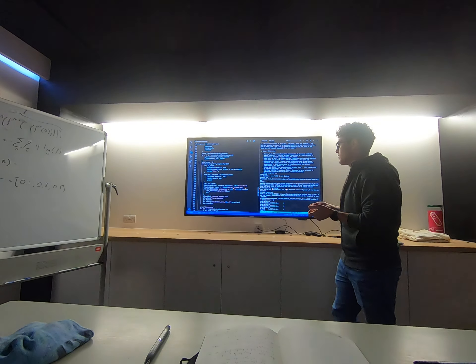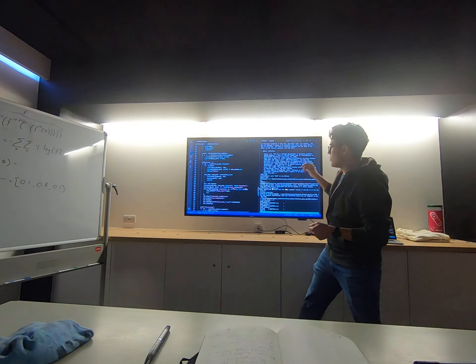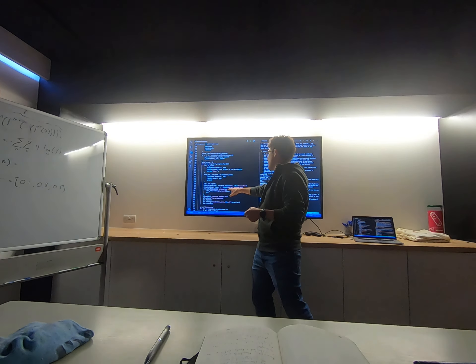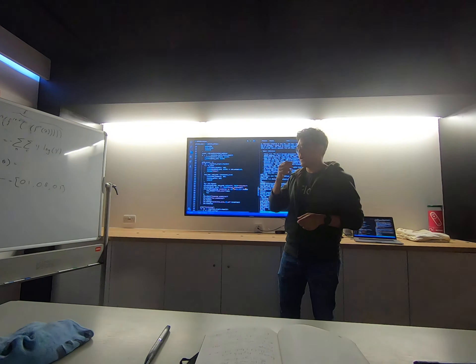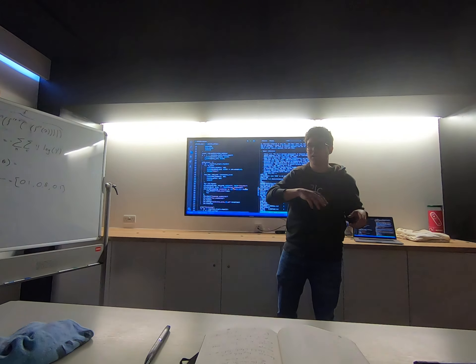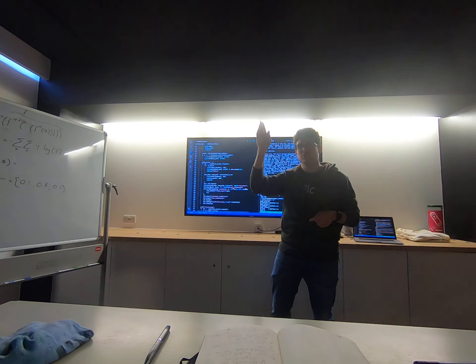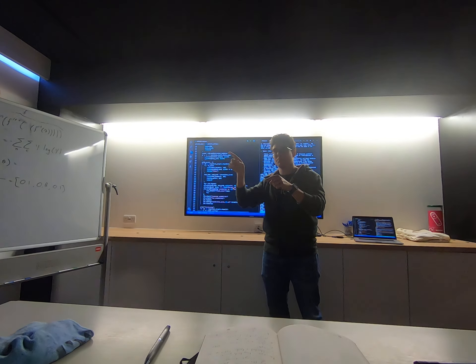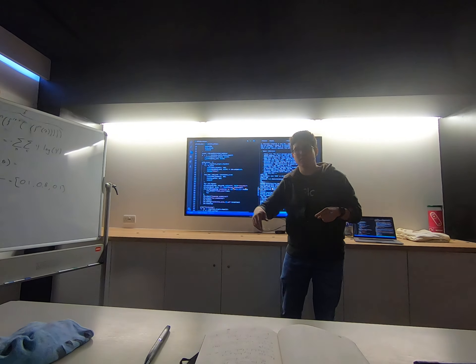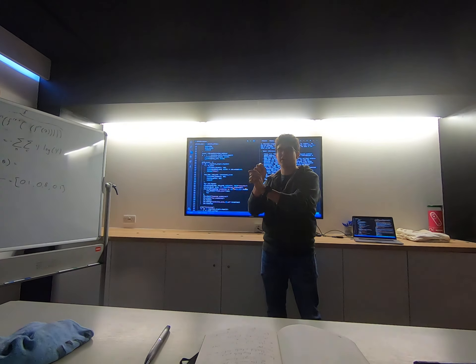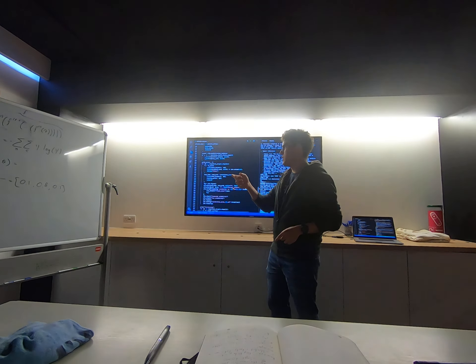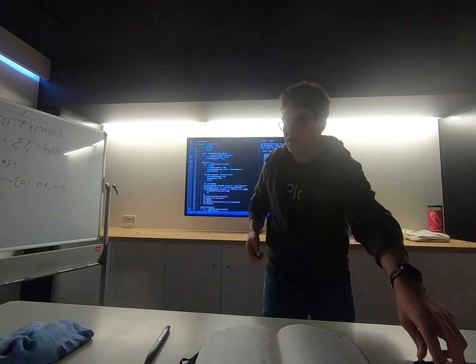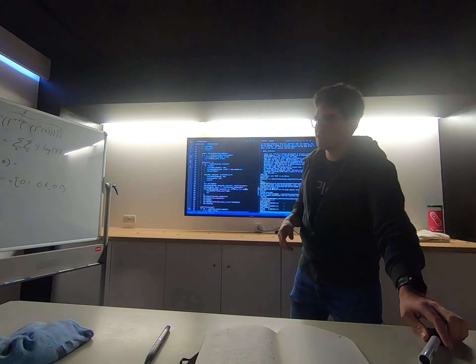So the question is, is it well calibrated as well as having good accuracy? And so the way we're going to do this, I'm going to use scikit-learn - a function called calibration curve. And what calibration curve does is exactly what I explained before. So it takes all your predictions, all your softmax outputs that said 0.8, and it puts them in one bin.